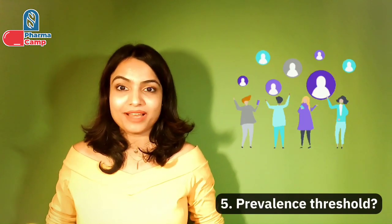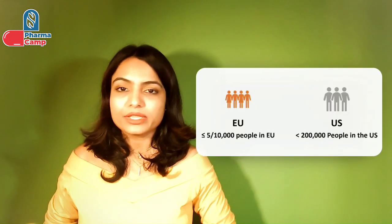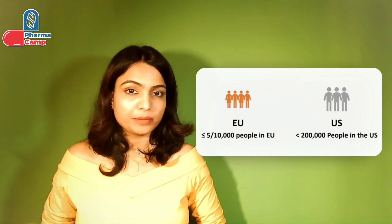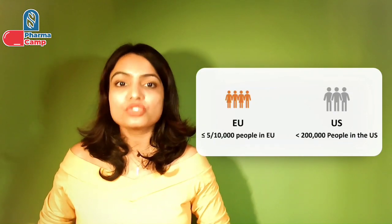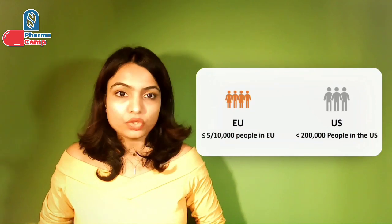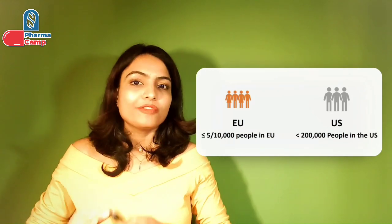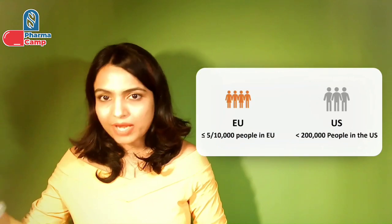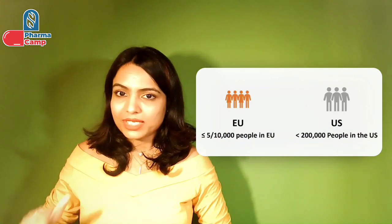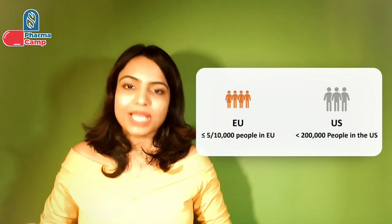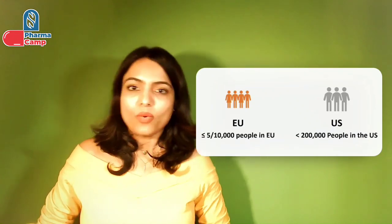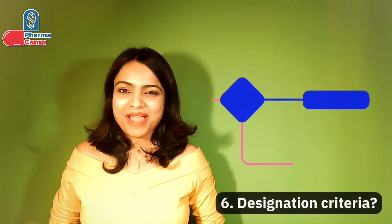The fifth comparison point is prevalence — the number of people affected by the disease to qualify it as a rare disease. In the EU, the threshold is less than or equal to five in ten thousand people. In the US, this is a fixed number: less than 200,000 patients. So in the EU the number is a proportion, while in the US it is a fixed absolute number.